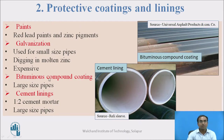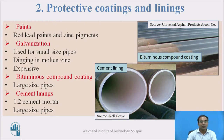The third one is bituminous compound coatings, in which we use bituminous for the coating of pipes. It is mostly done for conveying systems, or large pipes. If you see in this diagram, the outer perimeter is coated with the bituminous. The fourth one is cement linings — we use cement for the coating of interior pipes, in which we mostly use a 1:1 ratio cement mortar. It is also mostly done for conveying system pipes. If you see in this diagram, you can understand the interior pipe is coated with the cement lining.